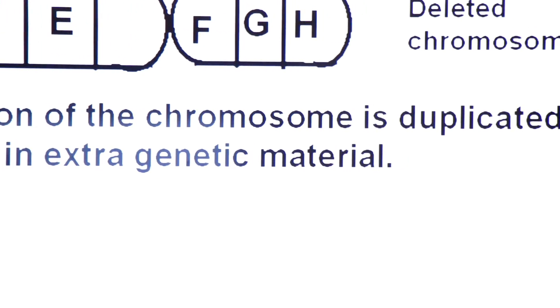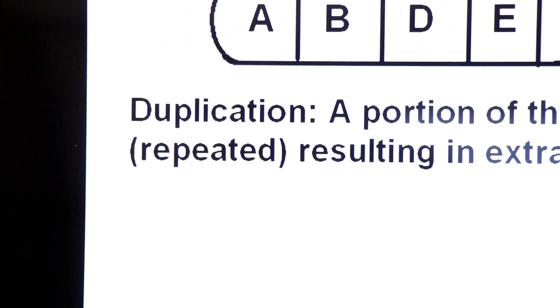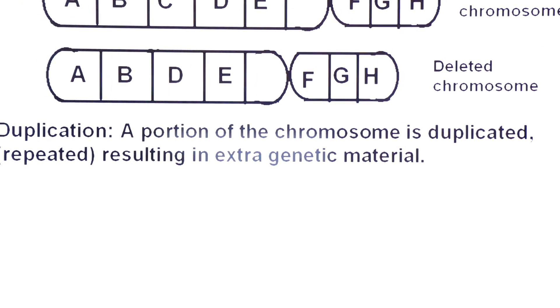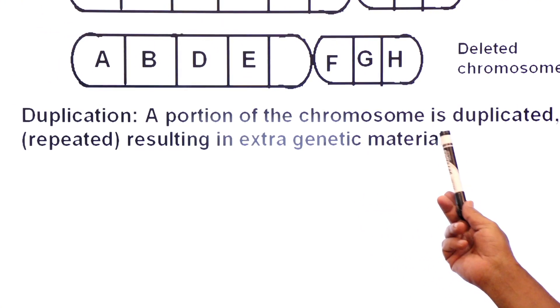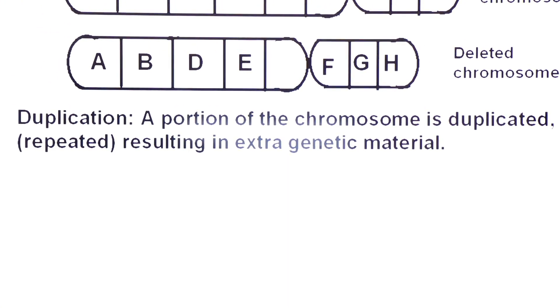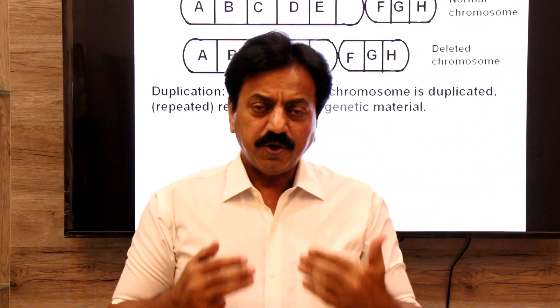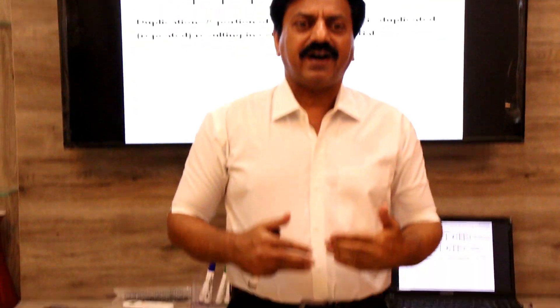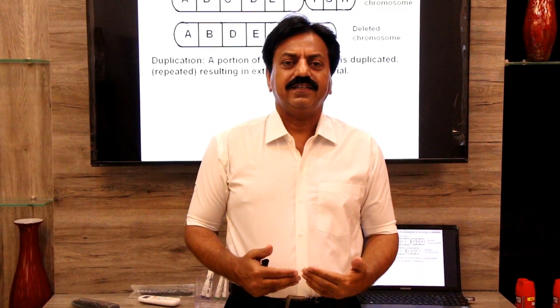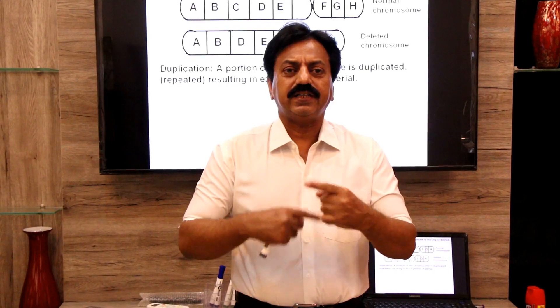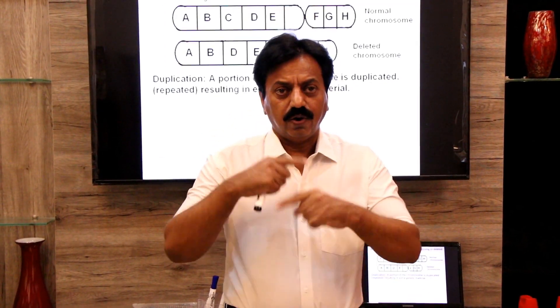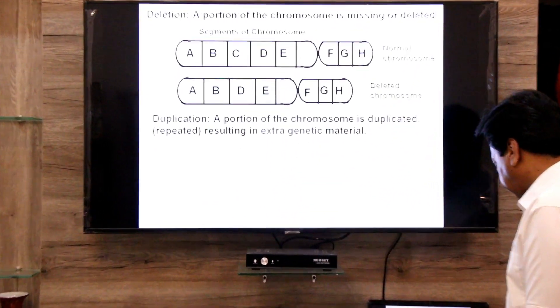Now we come to the second type: duplication. A portion of the chromosome is duplicated or repeated, resulting in extra genetic material. In duplication, one or two segments of the chromosome are repeated, and the chromosome with duplication will have an extra amount of genetic material.